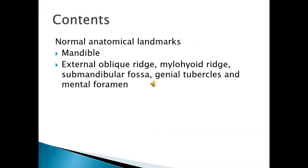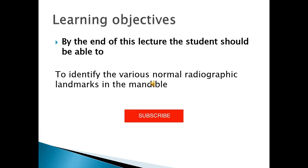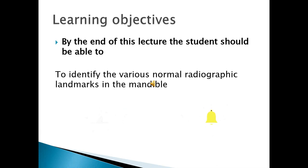What are the landmarks we would be looking for? We would be looking for landmarks such as the external oblique ridge and mylohyoid ridge, both of which are radiopaque. Then we would go further downwards into the submandibular fossa. By the end of this lecture, a student is expected to be able to label or at least interpret the key landmarks in the mandible, including the basic ones.